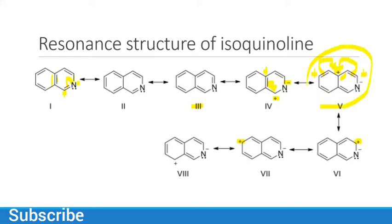From one resonance structure, we get two possibilities: the double bond moves in one direction or the other, which is why we have two resonance structures derived from one. The other resonance structure arises when the positive charge is here and this bond moves, giving a positive charge at a new position. The last one is the same — the electron comes from here, giving a double bond here, returning to our first structure. So we have a total of eight resonance structures for isoquinoline.